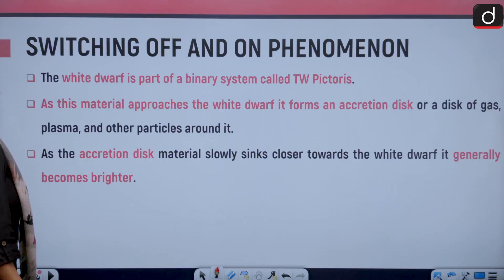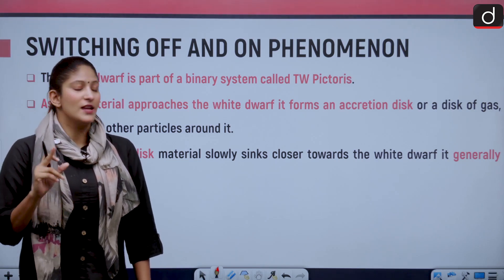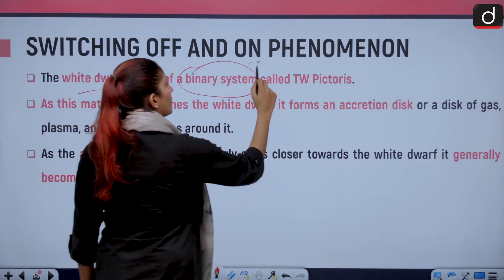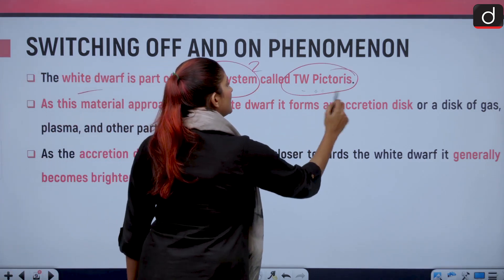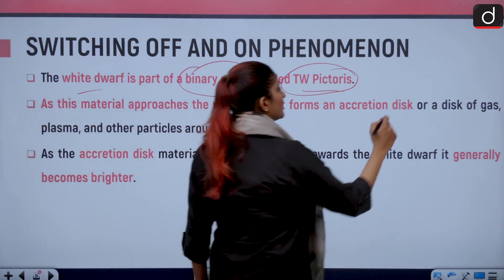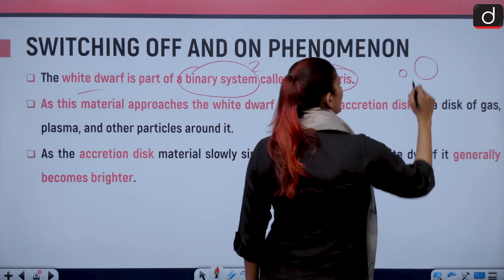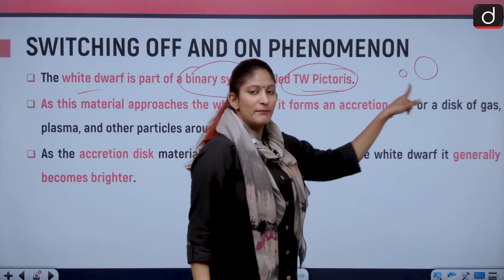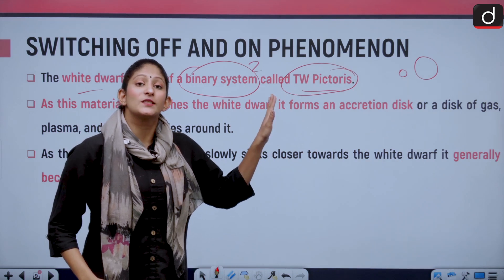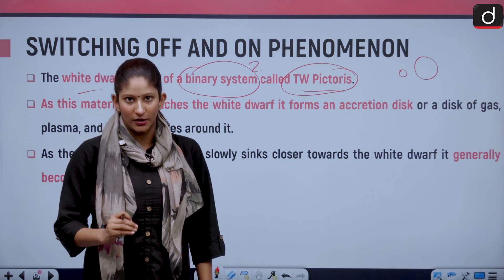Let's move forward and talk about the white dwarf that has been in the news. The white dwarf is a part of a binary system—that means two objects called TW Pictoris. TW Pictoris is a binary system which has a white dwarf and a star, another star. That is why it is known as a binary system. This belongs to the Pictoris constellation. It is 14,000 light years away from the earth.